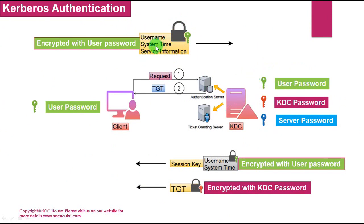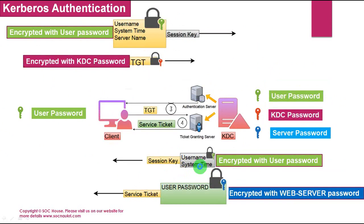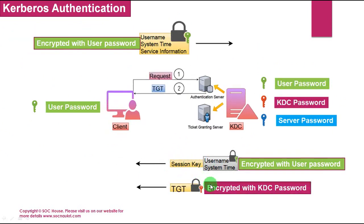The Authentication Server verifies all the details in the request. If they are valid, the server replies to the user with a session key and a TGT ticket. The session key is encrypted with the user password and contains the username and system time — the user password is required to decrypt it. The TGT is like an approval, also encrypted with the KDC password.